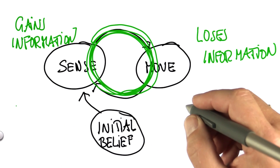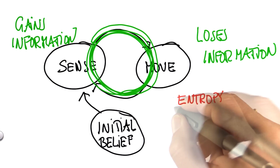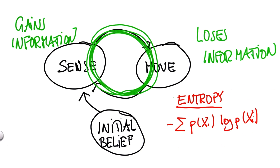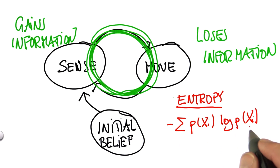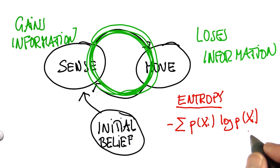As a footnote, there's a measure of information called entropy. It's the expected log-likelihood of the probability of each grid cell. This is a measure of information that the distribution has. And it can be shown that the motion step makes the entropy go down, and the measurement step makes it go up.